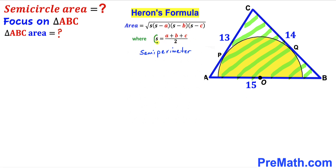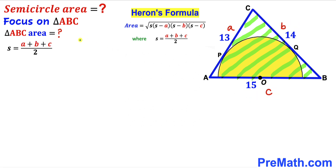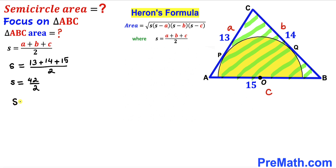This lowercase s is called the semi-perimeter. I'm going to label the sides as lowercase a, b, and c, so a equals 13, b equals 14, and c equals 15. Therefore S equals (13 plus 14 plus 15) divided by 2, which gives us S equal to 21.